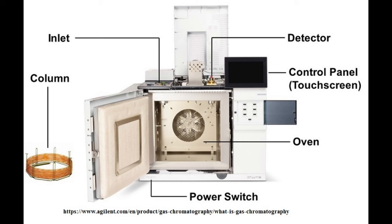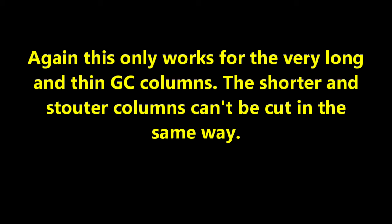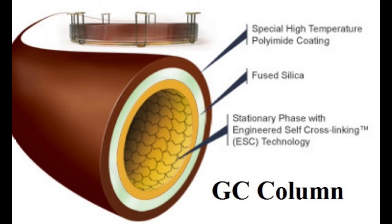Now obviously longer isn't always better because you want the run to finish today and we don't want excessive band broadening. We want a Goldilocks length but that Goldilocks length is still pretty long. Because the column is so long and thin it has to be handled gently as it is very easy to cut or break or crimp the thing. We can use the ease with which the column can be cut to trim the column if the beginning of it becomes gunked up with sample jizz as was mentioned earlier.